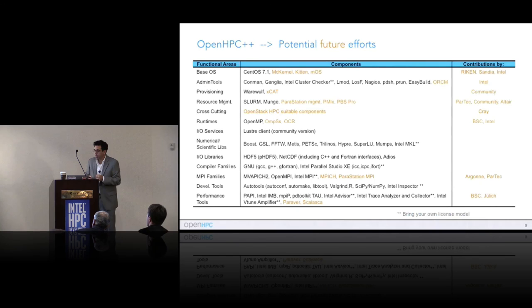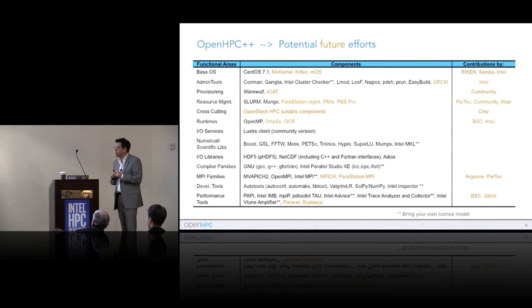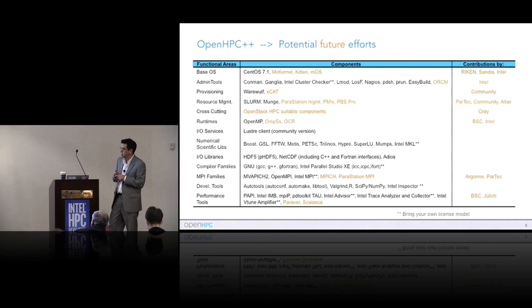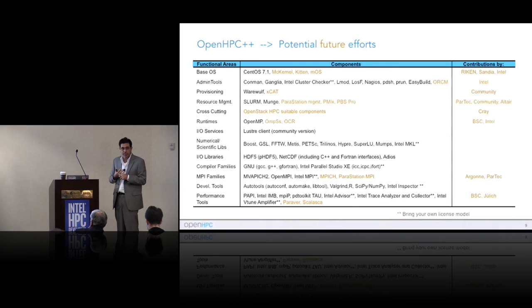That's what's available today — a good and useful list people are already building systems with, but clearly not everything. Here are some examples of things being thought about for future efforts by our collaborators: micro kernels and multi-OS, RAS (reliability/availability tools), another provisioning system like XCAT, another resource manager like PBS Pro, and more. We'd be interested in your feedback on what else makes sense to help us prioritize going forward.